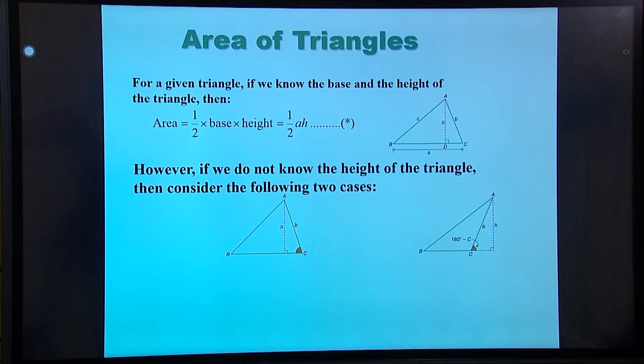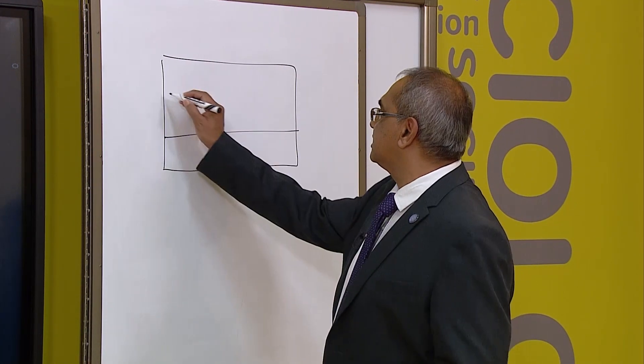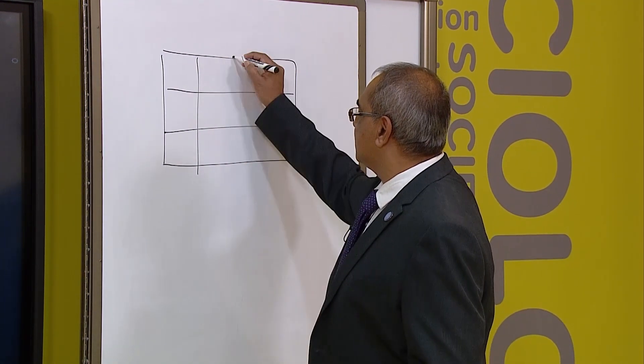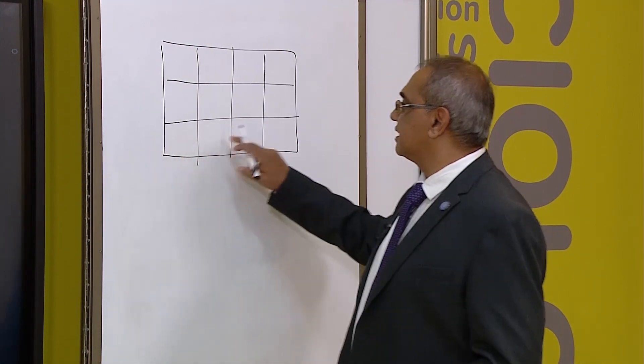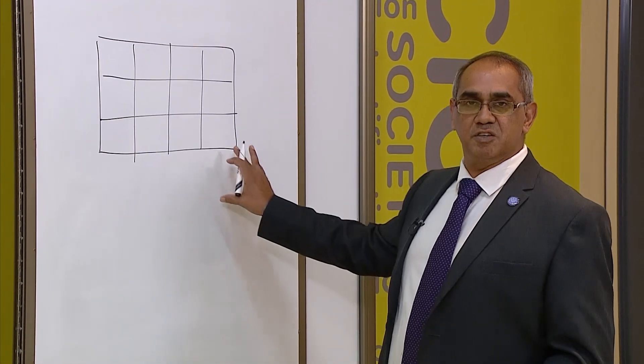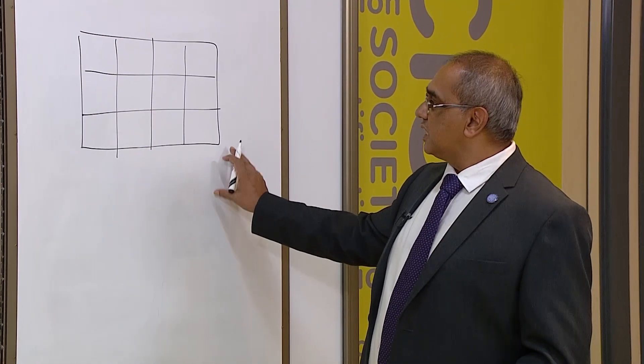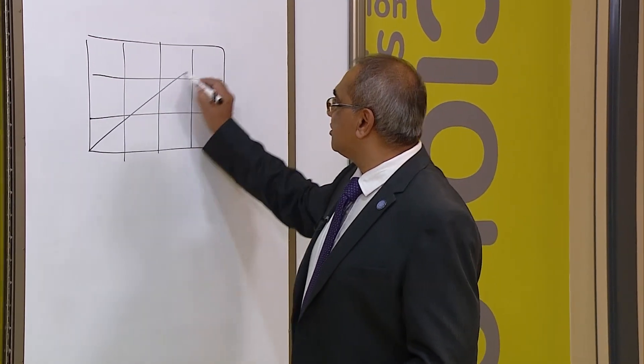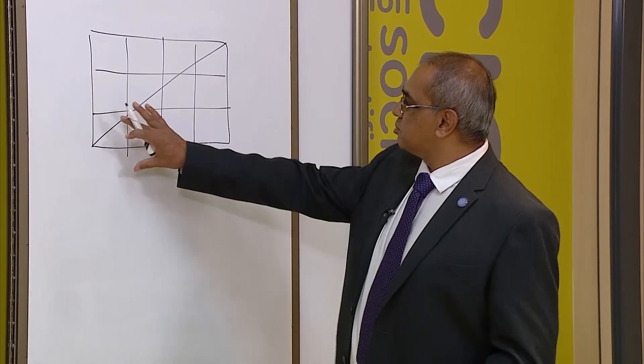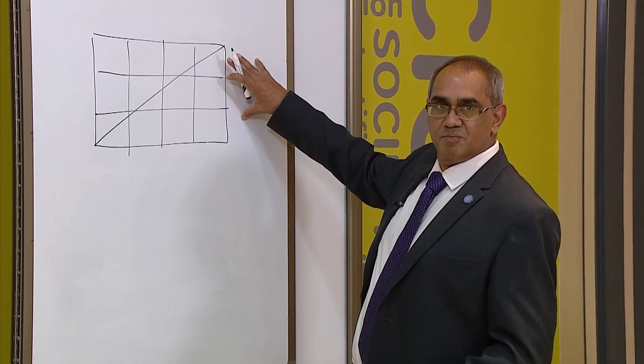If I had to draw a rectangle and if we had to cut this rectangle into blocks, and let's say each block is one, then I would be able to work out the area of this. And if I wanted to then find the area of a triangle, that would be half that area.